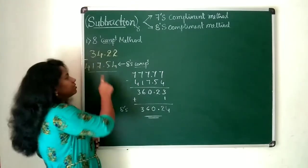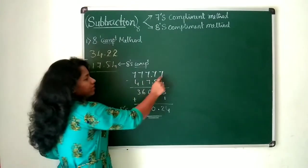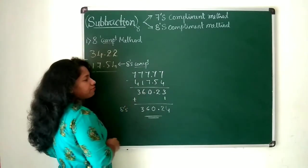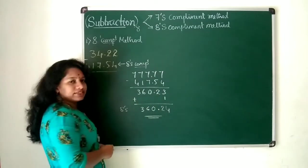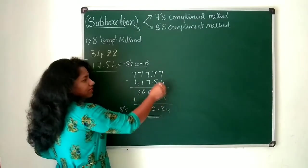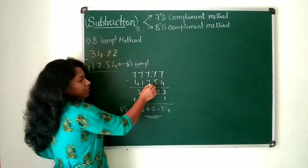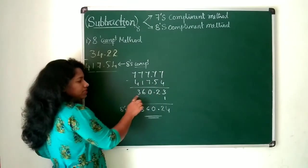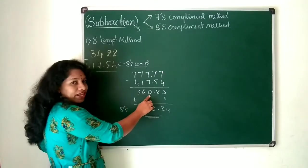5 positions are there in the subtrahend. You write 5 times 7 and then subtract this value 417.54. You keep the radix point as it is. 7 minus 4 is 3, 7 minus 5 is 2, 7 minus 7 is 0, 7 minus 1 is 6, 7 minus 4 is 3. Now this is your 7's complemented value.